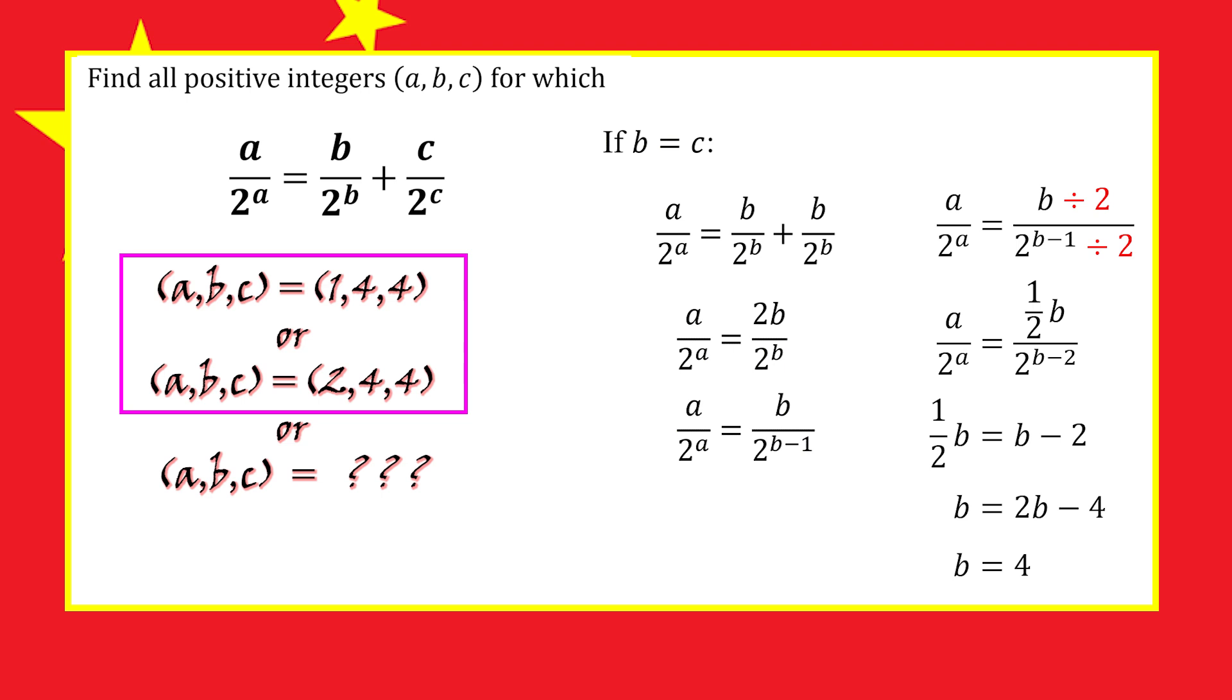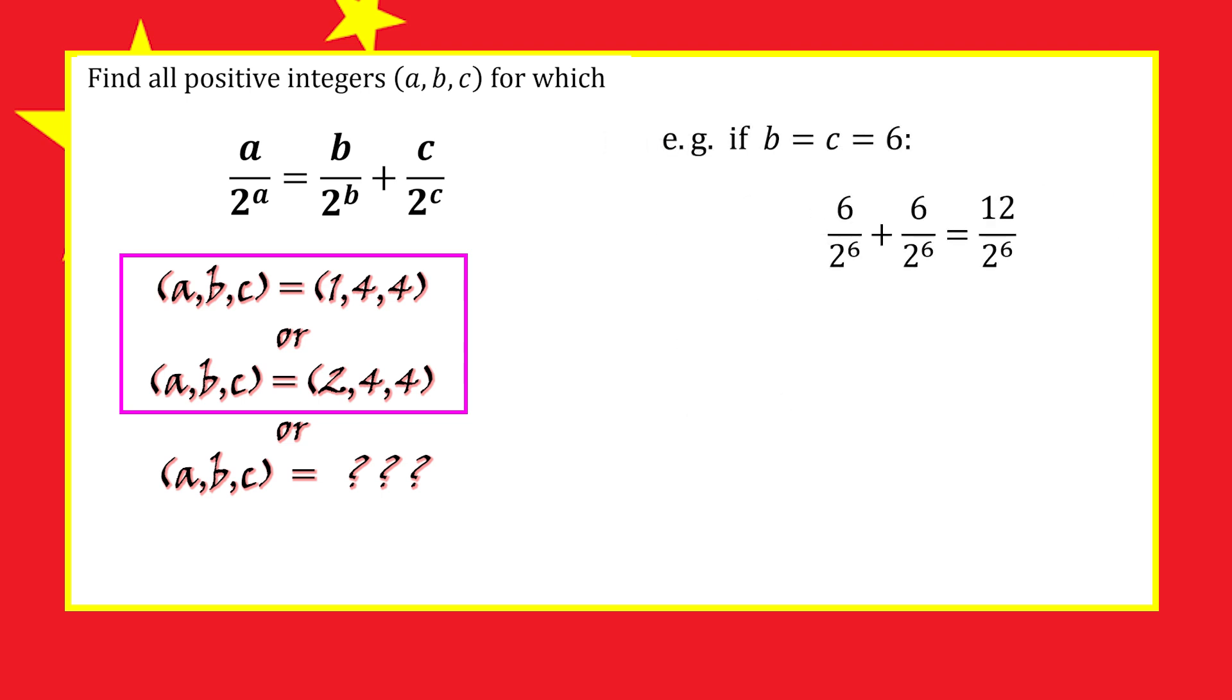When we add 6 over 2 to the 6 plus 6 over 2 to the 6, we get 6 over 2 to the 5, which is slightly larger than 5 over 2 to the 5 but nowhere near 4 over 2 to the 4. It's stuck between two numbers in the list, and similar things happen for larger values of b.